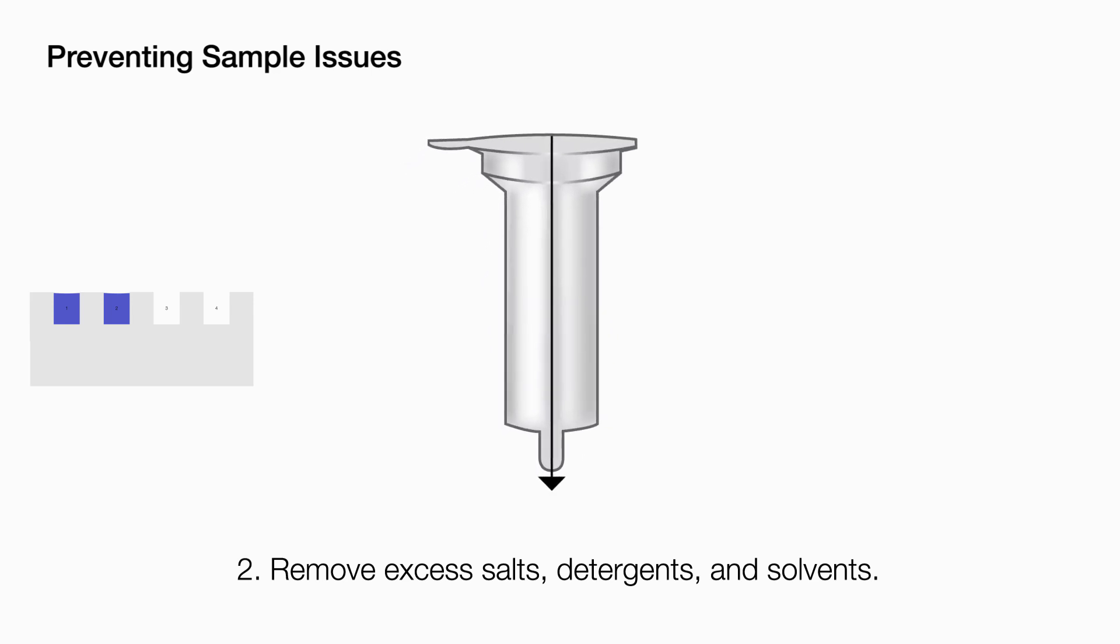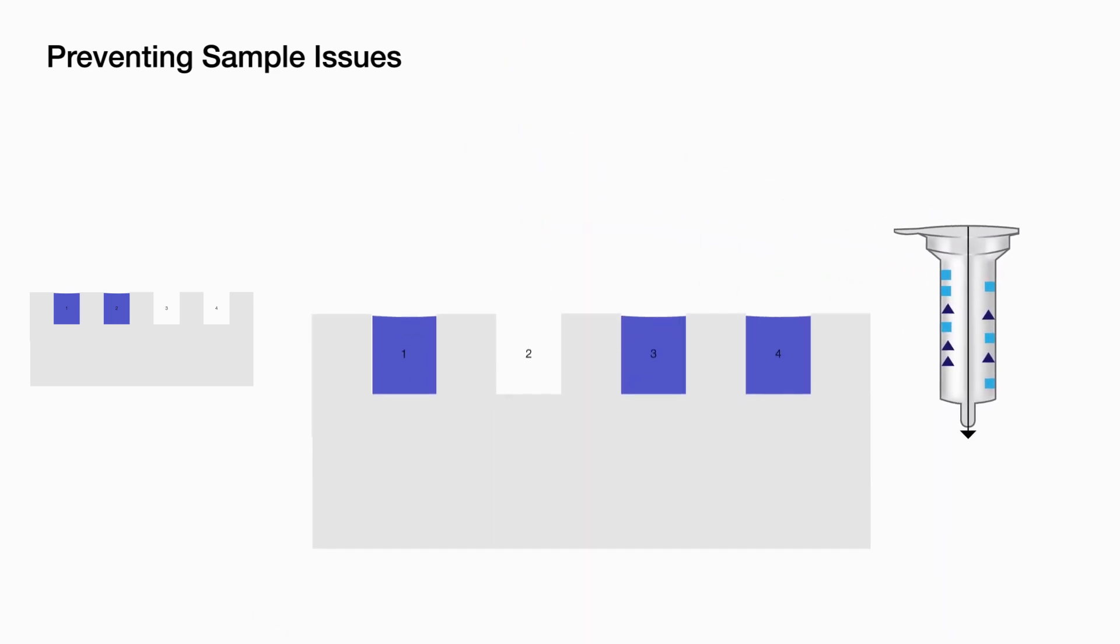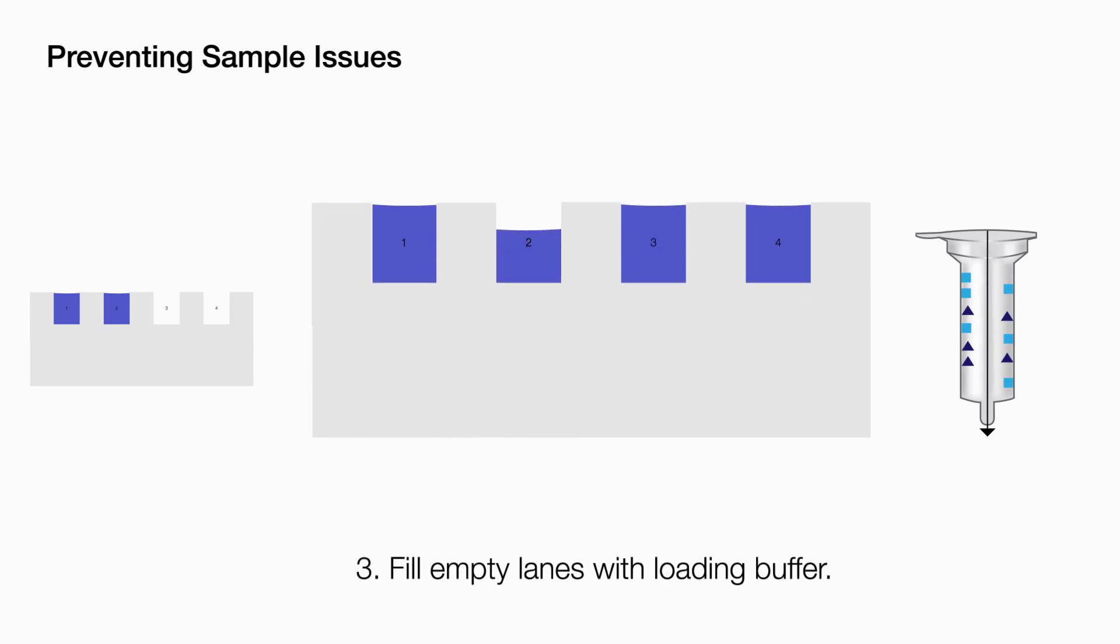If your samples have excess salts, detergents, or solvents, dilute them or clean them up using a spin column prior to loading. Fill any empty lanes with loading buffer to ensure even sample migration.